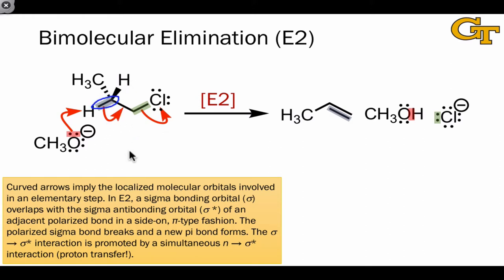And really the key interaction in E2 is sigma to sigma star orbital overlap between the sigma bond in blue and the sigma star orbital associated with the bond highlighted green here.